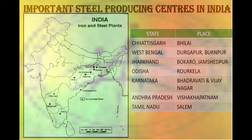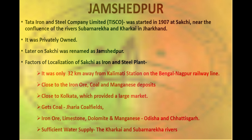Important steel producing centers in India are Bhilai in Chhattisgarh, Durgapur and Burnpur in West Bengal, Bokaro and Jamshedpur in Jharkhand, Rourkela in Odisha, Bhadravati and Vijayanagar in Karnataka, Vishakhapatnam in Andhra Pradesh, and Salem in Tamil Nadu. Before 1947, there was only one iron and steel plant, that is TISCO — Tata Iron and Steel Company Limited.